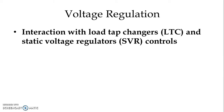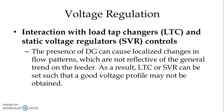Another issue with respect to voltage regulation is in connection with load tap changes and static voltage regulators control. The presence of DG can cause localized changes in flow patterns which are not reflective of the general trend on the feeder. As a result, load tap changes and static voltage regulators can be set such that a good voltage profile may not be obtained.